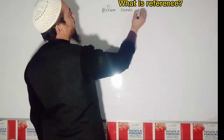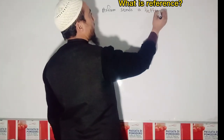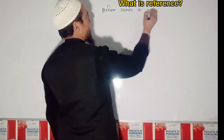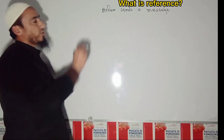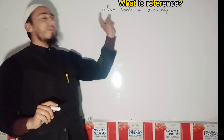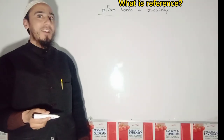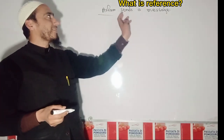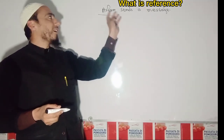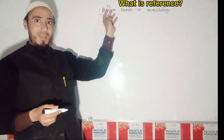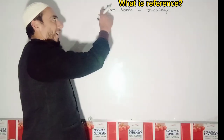For example: 'Aslam sends a message.' This is the best example. Here I'm talking about Aslam. So Aslam is an example of reference. When I say 'sends a message,' who is sending the message? Aslam. So here I'm talking about Aslam, and these words are actually referring to Aslam.